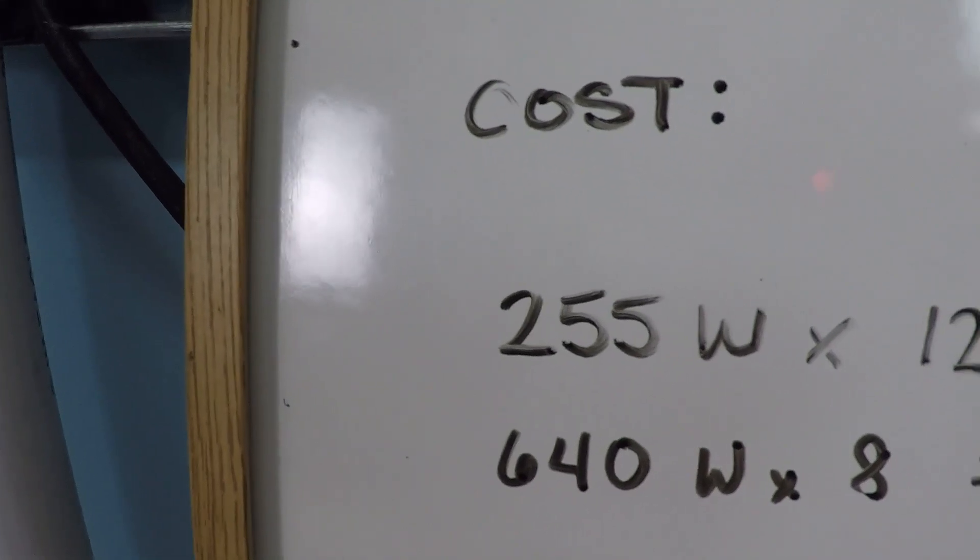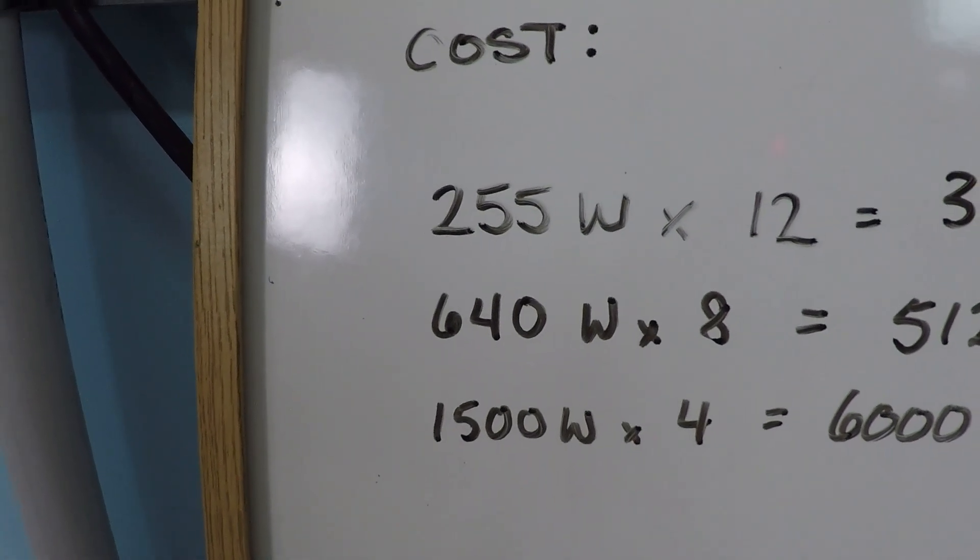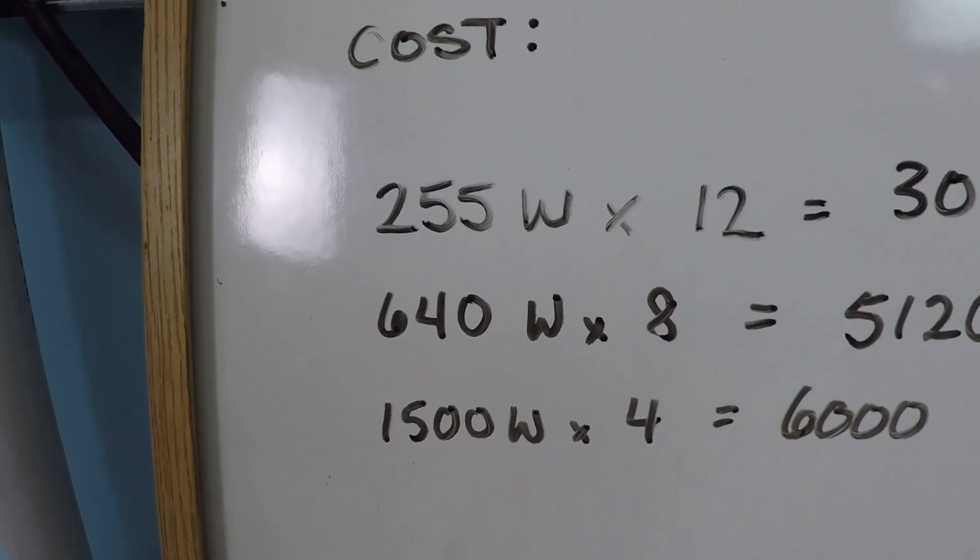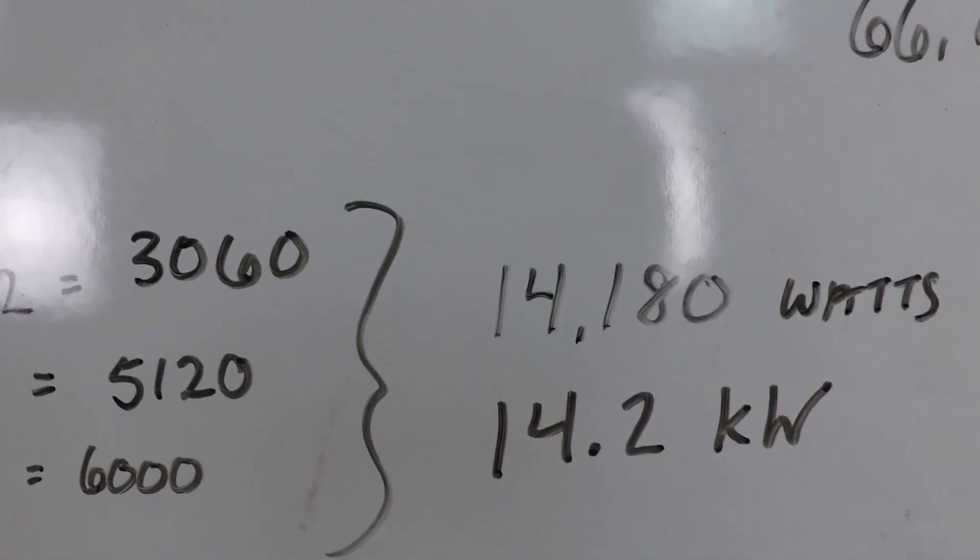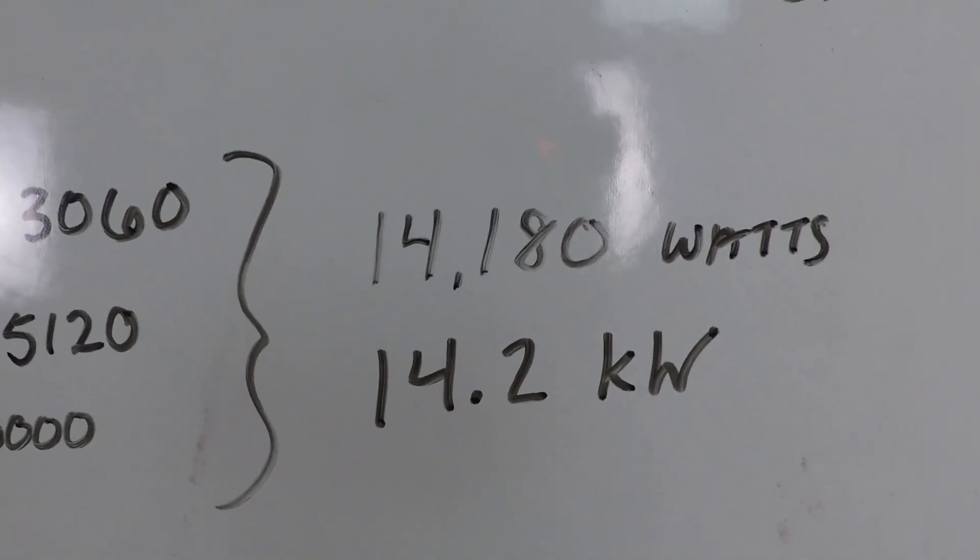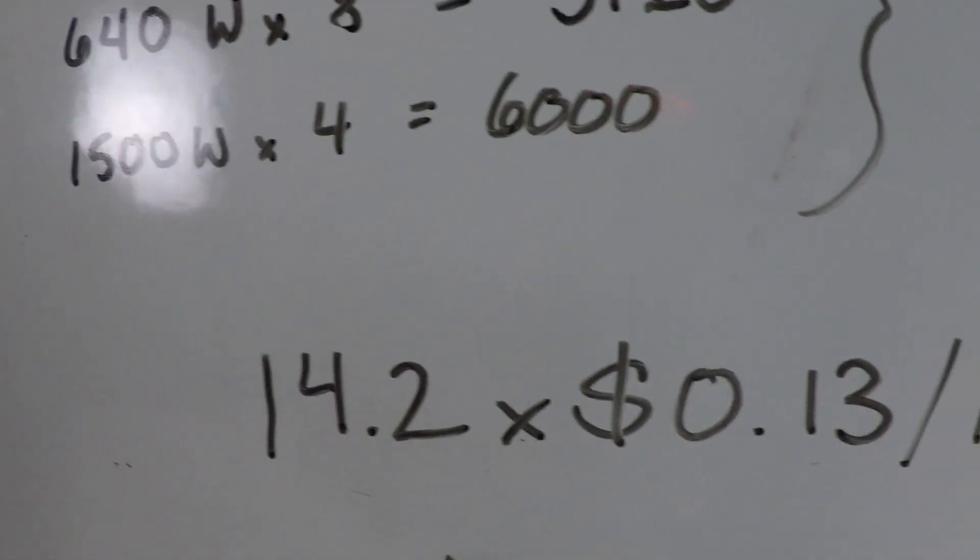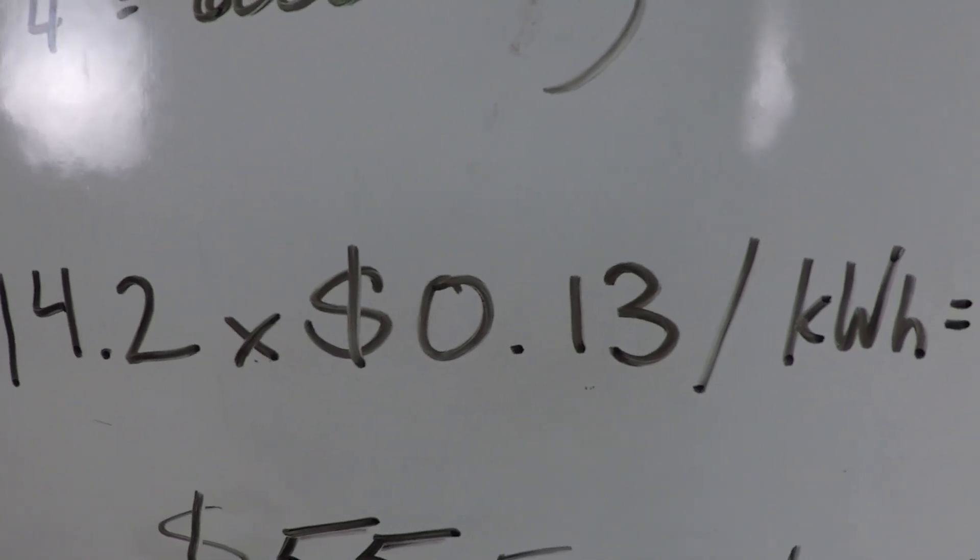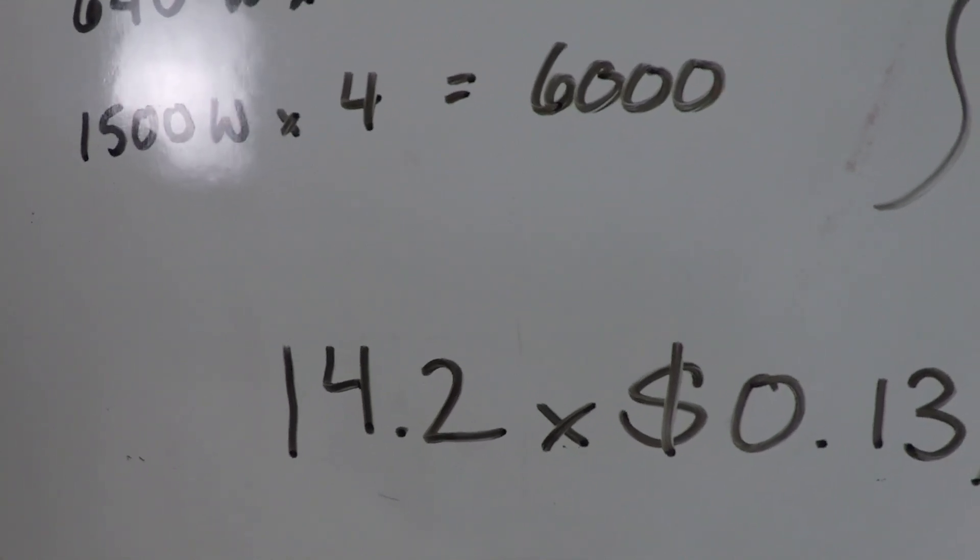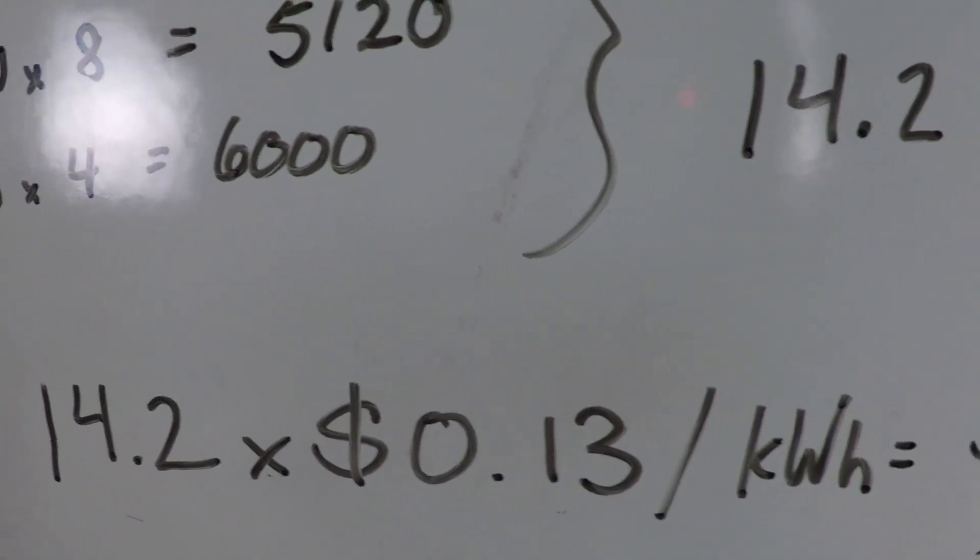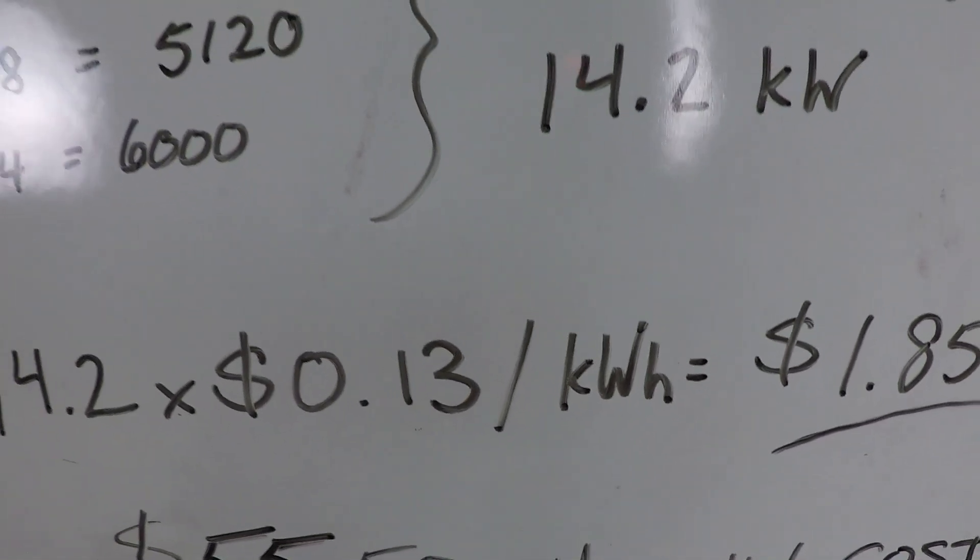Let's look at the cost. 255 watts of power times 12 hours, 640 watts of power times 8 hours, and 1500 watts of power times 4 hours. Grand total 14,180 watts, rounded up to 14.2 kilowatts - that's how you pay for your power. You pay approximately 13 cents per kilowatt hour, so 14.2 kilowatts times 13 cents per kilowatt hour equals $1.85.